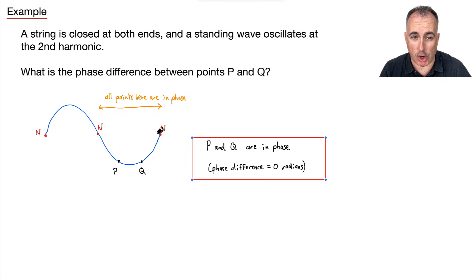But in this case, since they're in the same nodal region, between one node and the other node, then we say they're in phase, so the phase difference is zero.